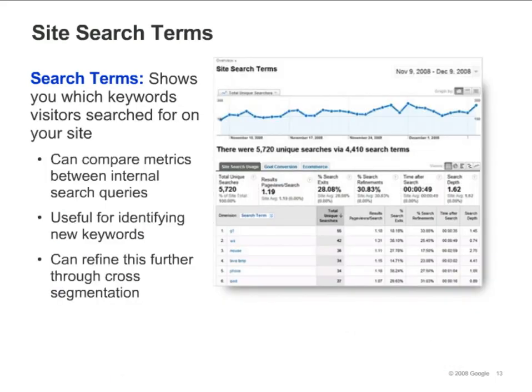The search terms report only includes visits during which a search was performed. From the screenshot on the slide, you can see that there were 5,720 searches, and that 4,410 search terms were used. The terms are listed in the table, and you can see how each term compares in terms of number of searches, percentage of search refinements, conversions, and other metrics. Looking at the search terms that people use to search once they are on your site can give you ideas for keywords that might also help drive traffic to your site.